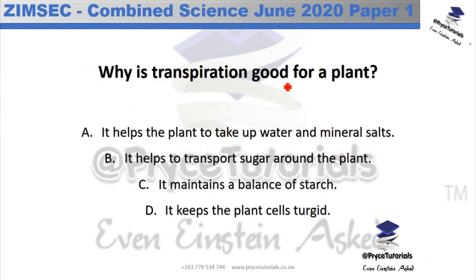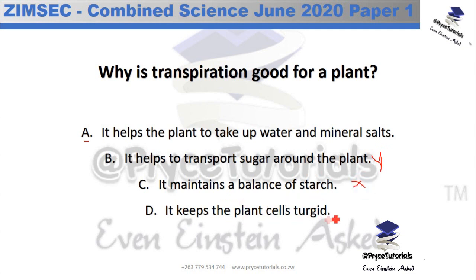The question asks why transpiration is good for a plant. Option A — it helps the plant take up water and mineral salts — is correct. Transporting sugar around the plant is not an importance of transpiration. Maintaining a balance of starch is not correct either. Keeping the plant turgid is not the best answer here. So we take option A: transpiration helps in the uptake of water and mineral salts.